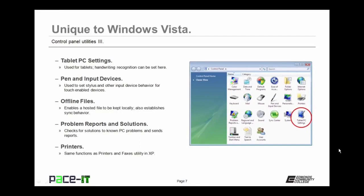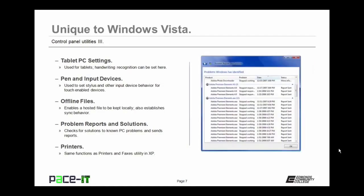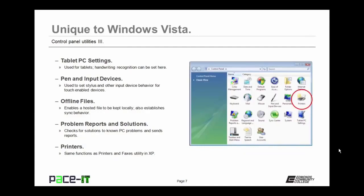Now let's move on to utilities unique to Windows Vista. The Tablet PC Settings utility is used for tablets and handwriting recognition. The Pen and Input Devices utility sets stylus and other input device behavior for touch-enabled devices. Windows Vista added offline files capability, and the Offline Files utility enables a hosted file to be kept locally and establishes synchronization behavior for when it goes back online. The Problem Reports and Solutions utility checks for solutions to known PC problems and sends reports to Microsoft.